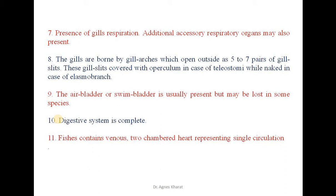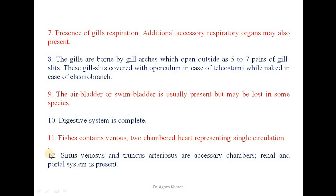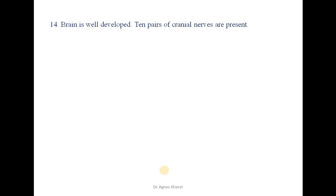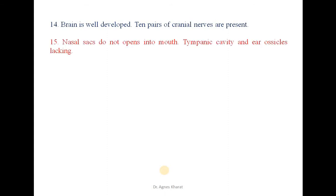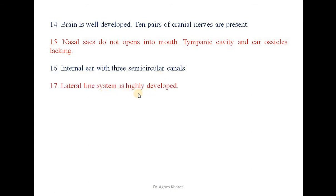The heart is two-chambered, representing single circulation. Sinus venosus and truncus arteriosus are accessory chambers. The renal and portal system is present. Erythrocytes in Pisces are nucleated. The brain is well developed, and there are 10 pairs of cranial nerves present. Nasal sacs do not open into the mouth. Tympanic cavity and ear ossicles are lacking. The internal ear has 3 semi-circular canals, and the lateral line system is highly developed.